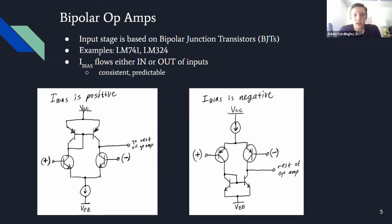The LM324 was sort of a big turning point in op amp technology when it came out. Nowadays you can get better op amps, but it's still an industry standard in a lot of ways. What's nice about bipolar input stages is the bias current is always flowing either into or out of the input — it's pretty consistent and predictable.